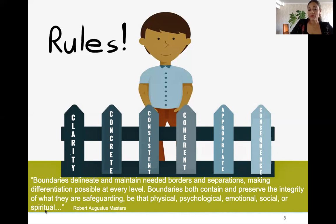Coming back to boundaries, boundaries delineate and maintain needed borders and separations, making differentiation possible at every level. Boundaries both contain and preserve the integrity of what they are safeguarding, be that physical, psychological, emotional, social, or even spiritual. This is a definition by Robert Augustus Masters. Coming back to the example of the fence, we will say that a no trespassing sign on a fence might be the rule. The fence itself is the boundary, the boundary where that rule exists.